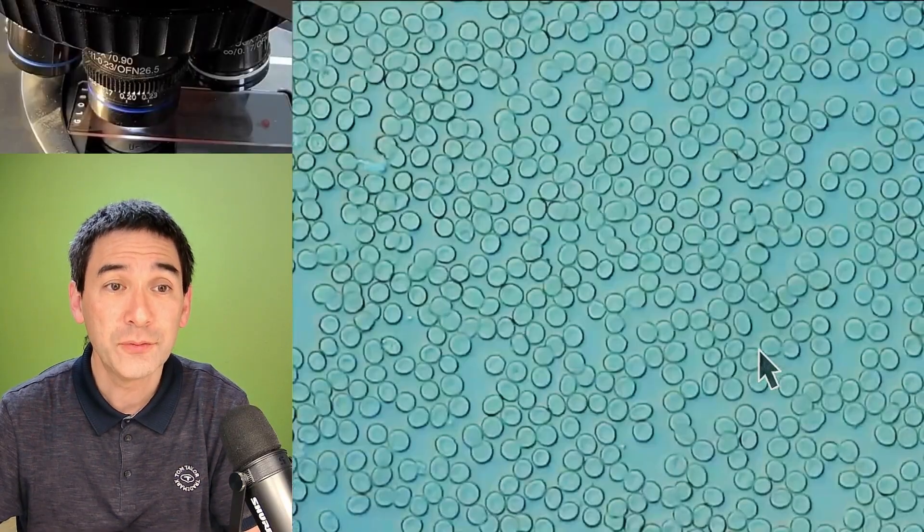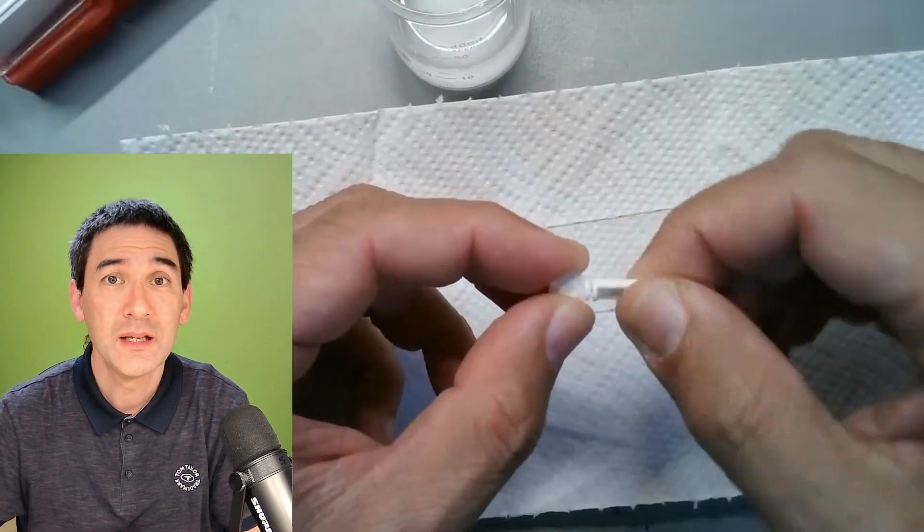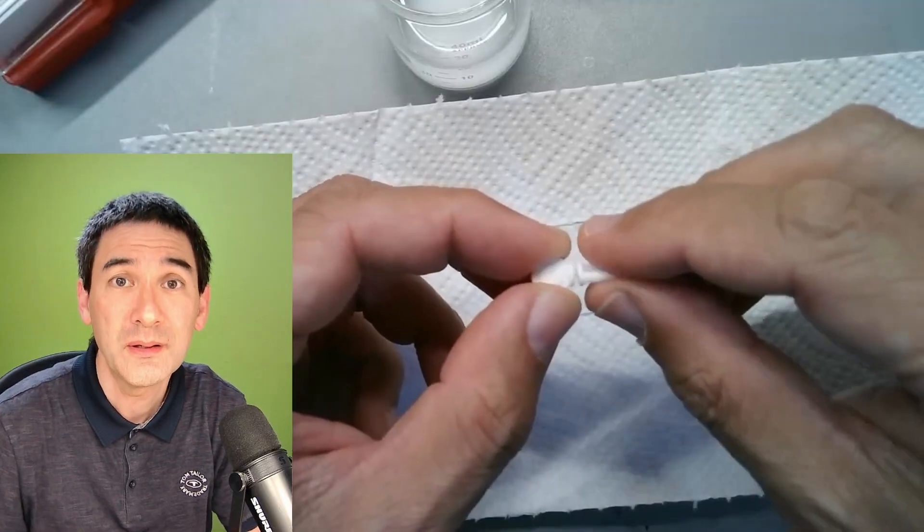And over here again this is a fresh blood sample but here the blood cells essentially started to become stationary.